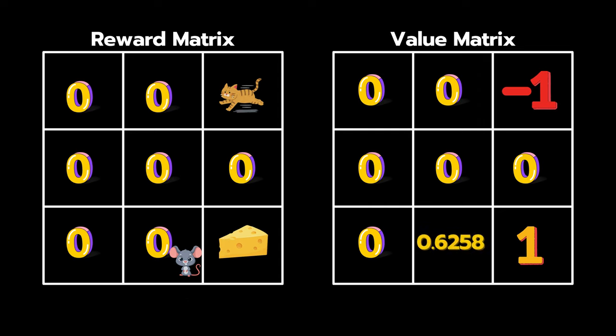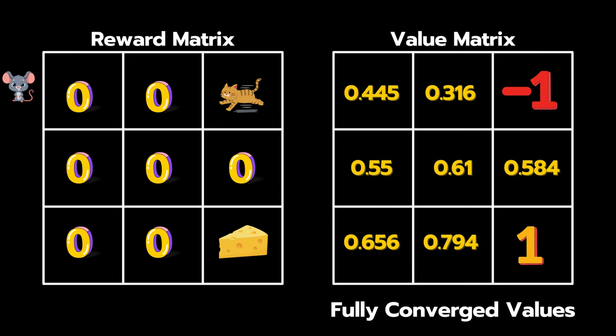Now, by iterating multiple times over all the states, we can eventually converge to the value for each state under probabilistic actions. But you can see this is different than using deterministic actions. You can find the link in the description where we provide the fully converged values for each state and the code snippet to do so.